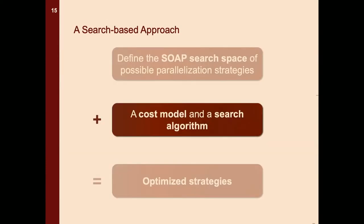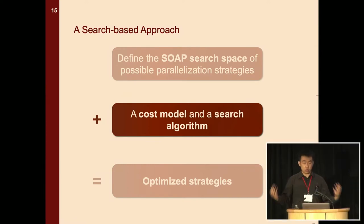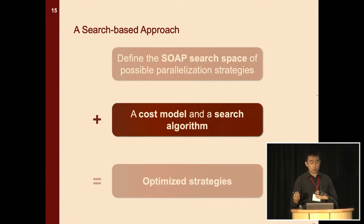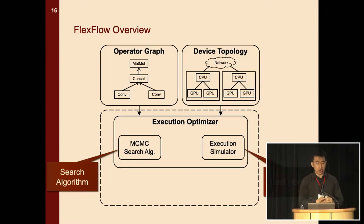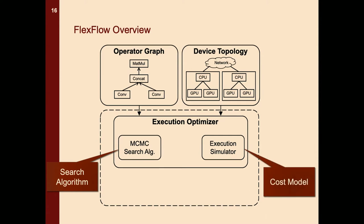Once we have defined the space of parallelism strategies, the next question is how to find an optimized solution in this large search space. We build a cost model and a search algorithm for this task, implemented in a system we call FlexFlow. FlexFlow takes as inputs two graphs: an operator graph describing the computation in your DNN model, and a device topology graph describing the set of available devices and their interconnections. These two graphs are sent to an execution optimizer which finds an optimized solution in the SOAP search space.